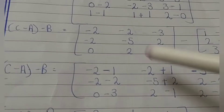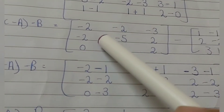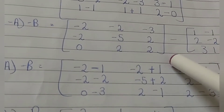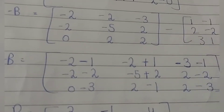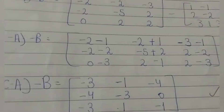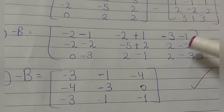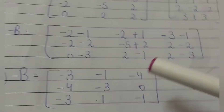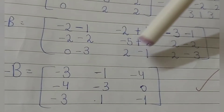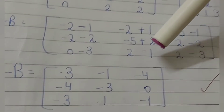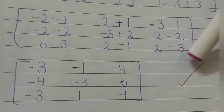Now computing (c minus a) minus b: minus 1 minus 2 equals minus 3, minus plus minus 2 plus 1 equals minus 3, minus 3 plus minus 0 equals minus 1, minus 2 minus 2 equals minus 2, minus 2 minus 5 equals minus 5, plus 2 equals minus 2, 0 minus 3 equals minus 2, minus 1 minus 2 equals minus 3. We solve: minus 2 plus minus 3 minus 2 minus 1 minus 3 minus 1 minus 4, plus 2, 2, plus 2, 4 minus 5 minus 3, minus 3, 2, minus 2.